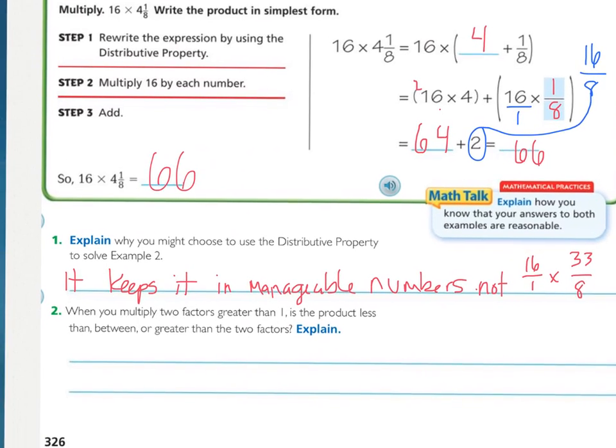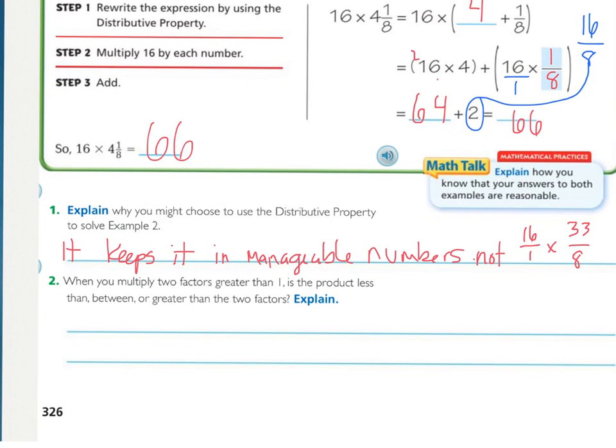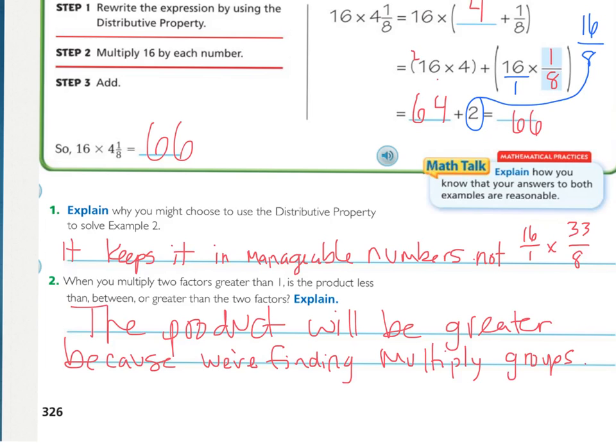The next one is, when you multiply two factors greater than 1, is the product less than, between, or greater than the two factors? So we can look right here again, 16 is greater than 1, 4 and one-eighth is greater than 1, and our answer is greater than both. This is because we're combining two groups, and maybe not necessarily combining, but the product will be greater because we're finding multiple groups. So in this case, we're finding 16 groups of 4 and one-eighth.